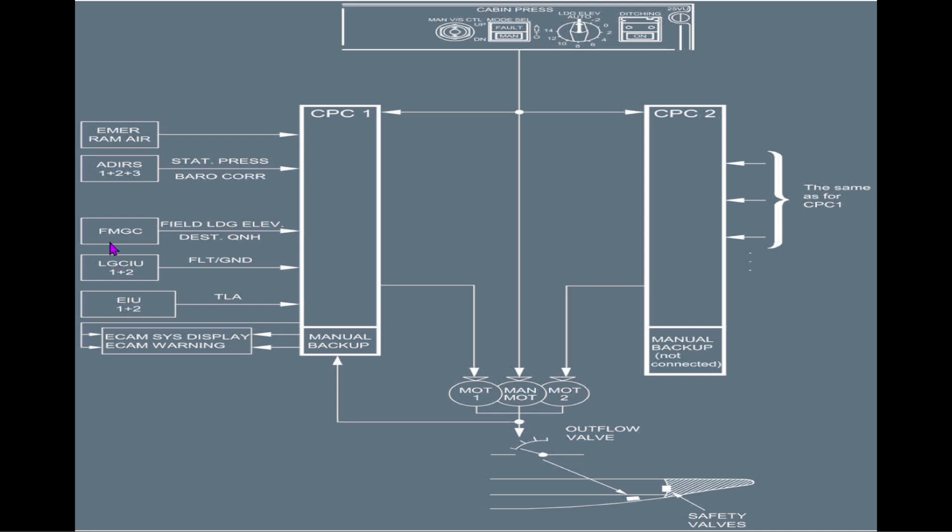Der Flight Management Guidance Computer liefert die Field Landing Elevation aus der Database – er weiß, wohin wir fliegen und auf welcher Flugplatzhöhe der Zielflughafen liegt. Fällt das Flight Management System aus, müssen wir diese Information manuell eingeben, wie bereits erklärt.